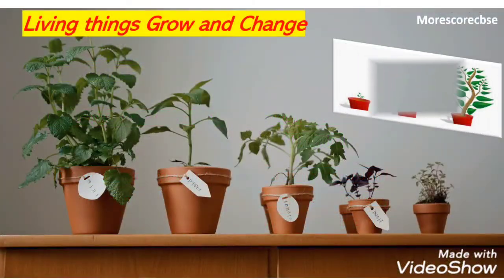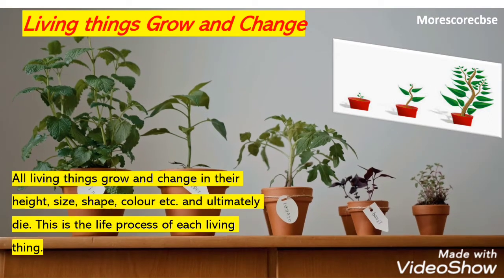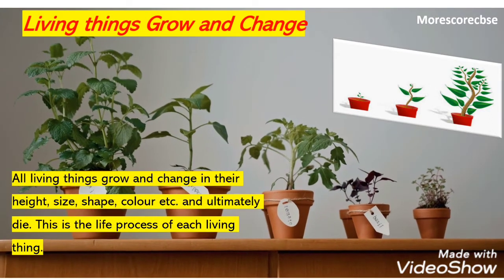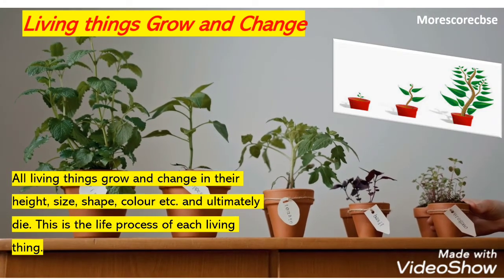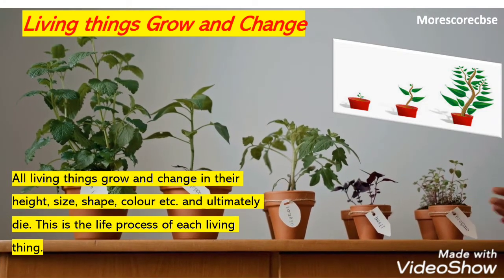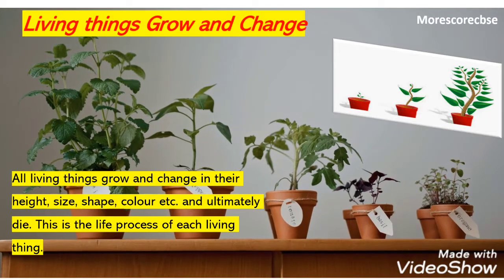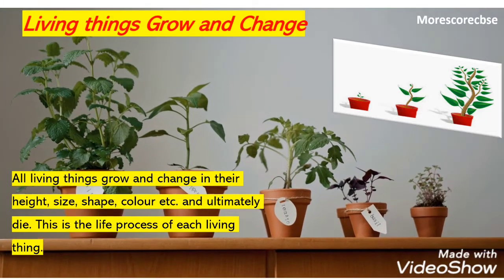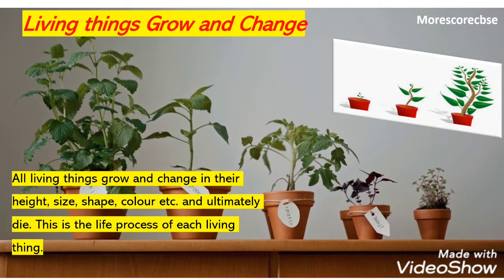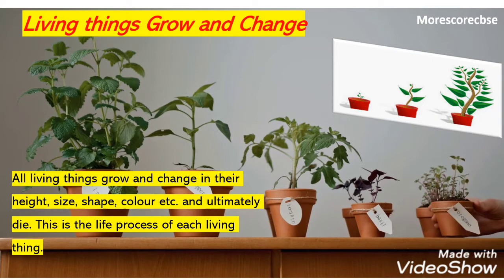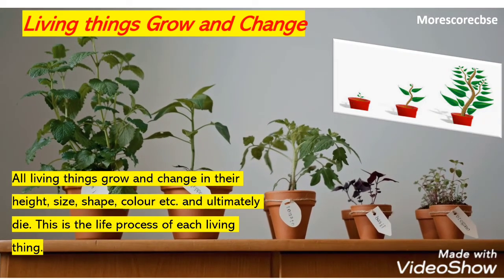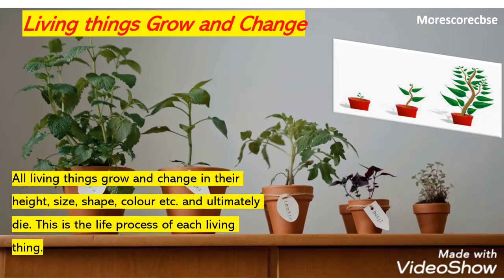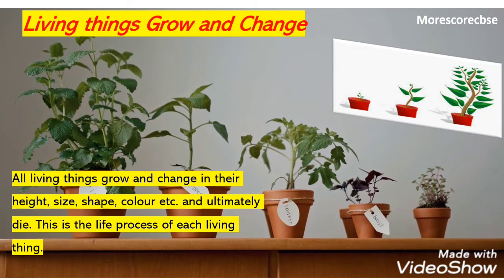The next major characteristic is that living things grow and change. The basic life process of living things is that they grow and change in their height, size, shape, and color, and finally die. In most plants, seeds first germinate, then become a sapling, then a small shrub, then a tree. It gives us flowers, fruit, and leaves, and finally dies.